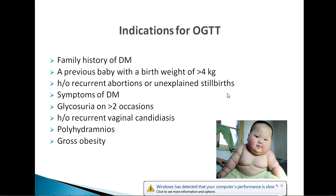You need to have an optimal sugar level. The fasting plasma glucose should be less than 5.3, and the two-hour blood sugar reading should be less than 7.8. If the sugar level is more than this, you might be diagnosed to have gestational diabetes.